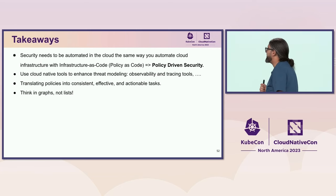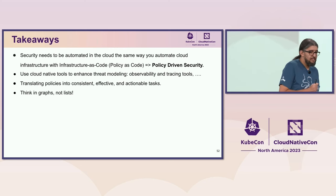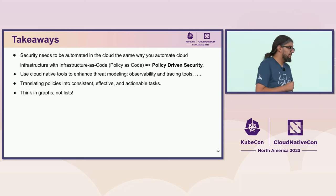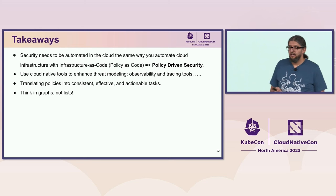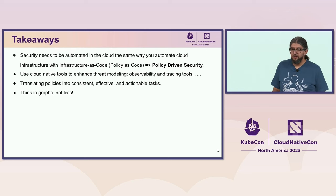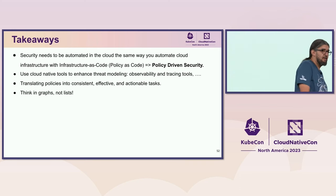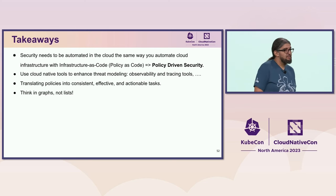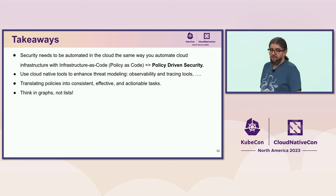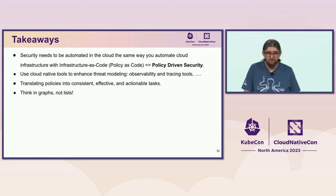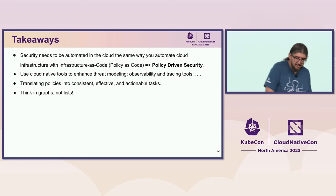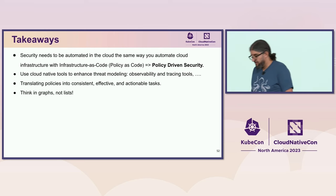What can we take back from this talk? First, security needs to be automated, especially in the cloud, because you have to follow your DevOps and developer teams — think about infrastructure as code, policy as code, and policy-driven security. Second, use cloud-native monitoring, observability, and logging tools to ingest data and build detection. Third, be really agile with your policies since they change between environments and day to day in cloud. And finally, as mentioned earlier: think in graphs, not lists.